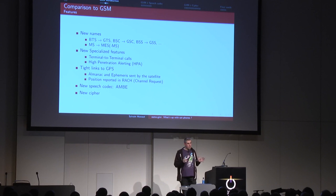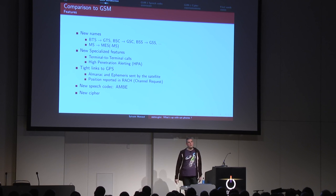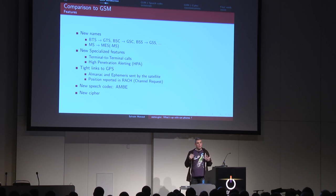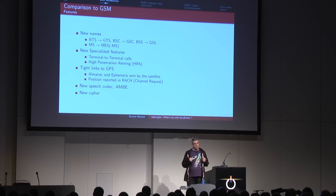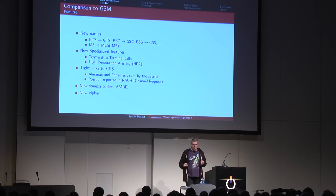There's also high penetration alerting. In practice, as soon as you're inside a building you can't see the satellite and can't place a call. But you still might want to know that somebody is calling you. They have a specialized channel with an incredible amount of error correction so that even with very low signal you can still get an indication that someone is trying to call you - so you can run outside to take the call.